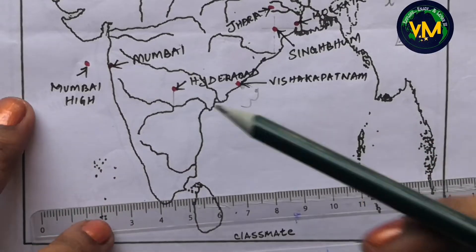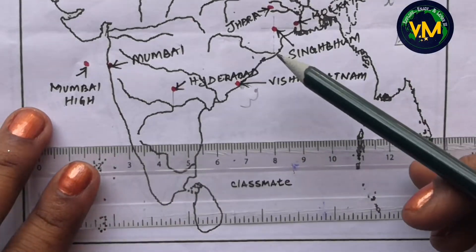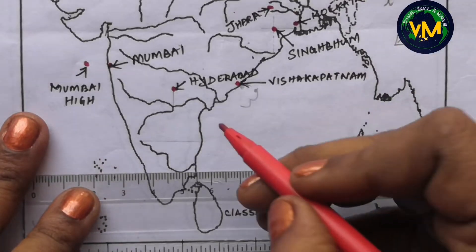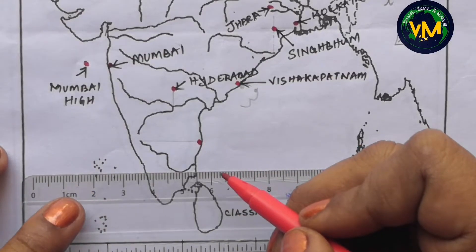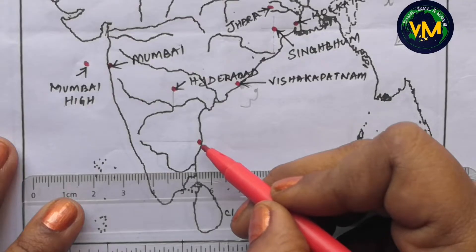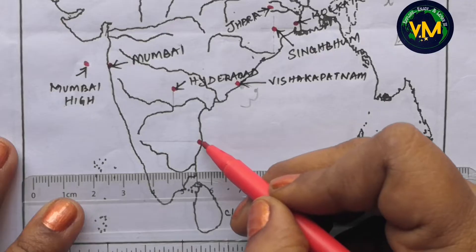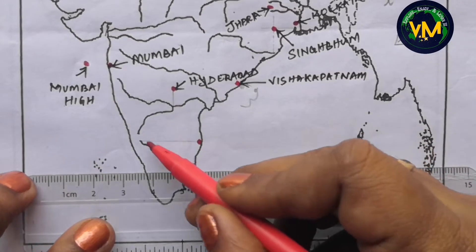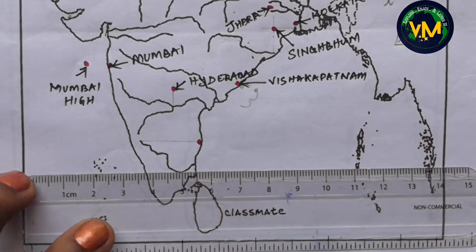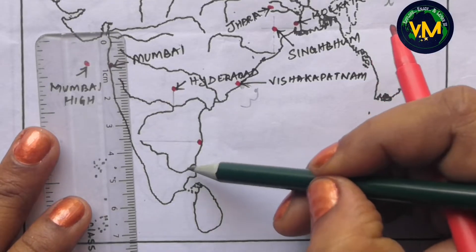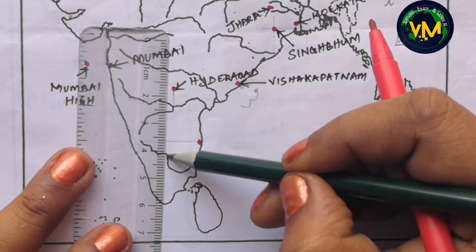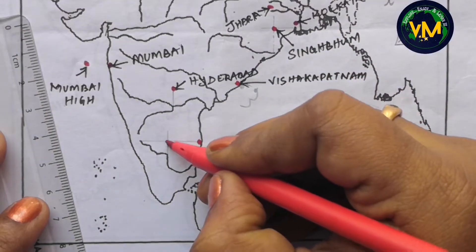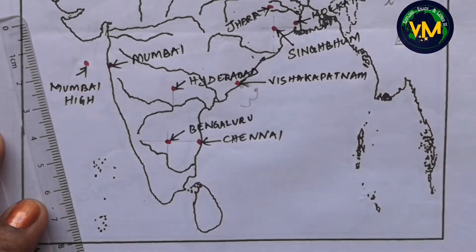Coming to Bengaluru and Chennai — again it's very easy to mark. You see this is the origin of River Kaveri. From the origin, take a scale and draw a straight line. Where it cuts the east coast, this is Chennai. It is a coastal city so do not draw it inside the sea, nor on the line — it should be inside the land but touching the coast. For Bengaluru, it is on the very same line, but you draw one more line from where Kaveri goes up. From that point, take a scale and draw a line — where they intersect, this is Bengaluru.